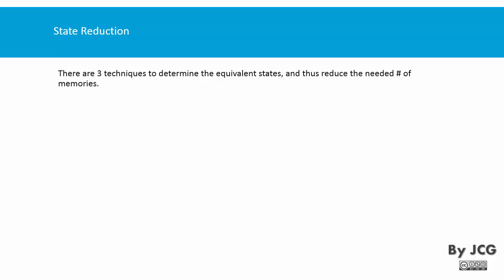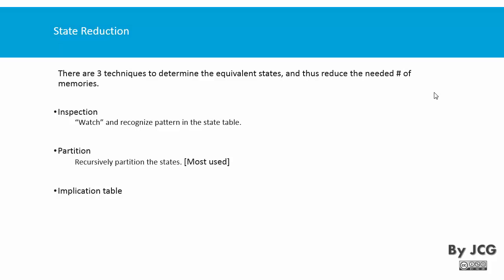There are three techniques to determine equivalent states and reduce the needed number of memories. The three techniques are inspection, partition, and the implication table. Inspection means you are able to watch and recognize patterns in a state table; however, this is one of the hardest because you need to identify equivalences just by looking. Partition is a recursive method — this is the one we are going to see in this video, and it is the most used technique. The implication table requires making a relationship table between all states; it is a more general solution but more time consuming.